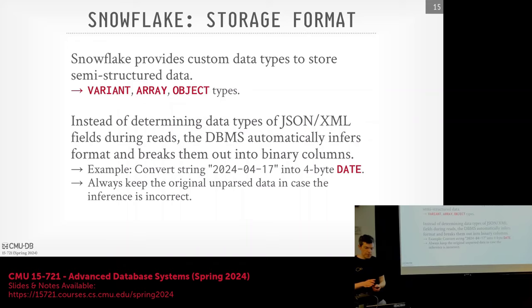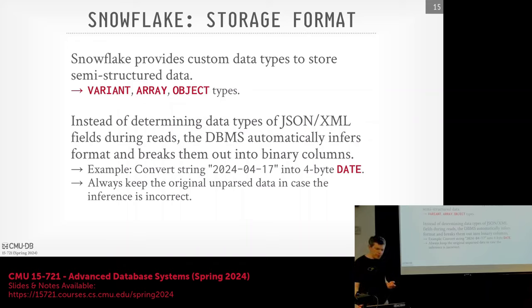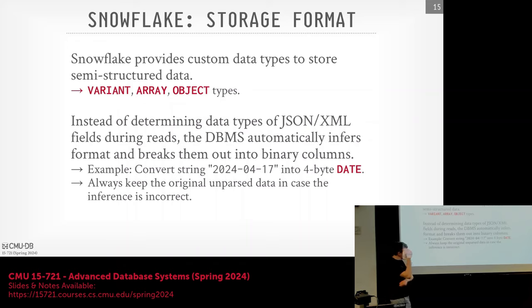This is where you start seeing the differences between systems. Dremel figures out types from known protobuf schemas. Photon figures them out at runtime during query execution. Snowflake figures them out upon ingestion — doing the parsing once and getting all the advantages of compression and encoding without redoing it every time a query runs. If it's proprietary storage and you control ingestion, you should definitely do this.